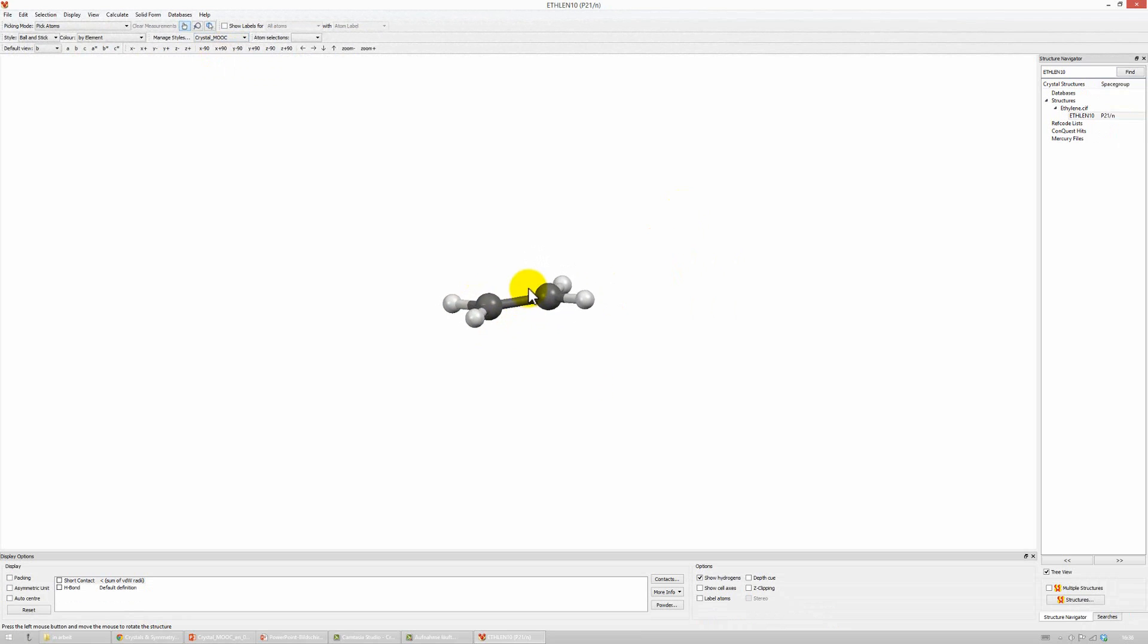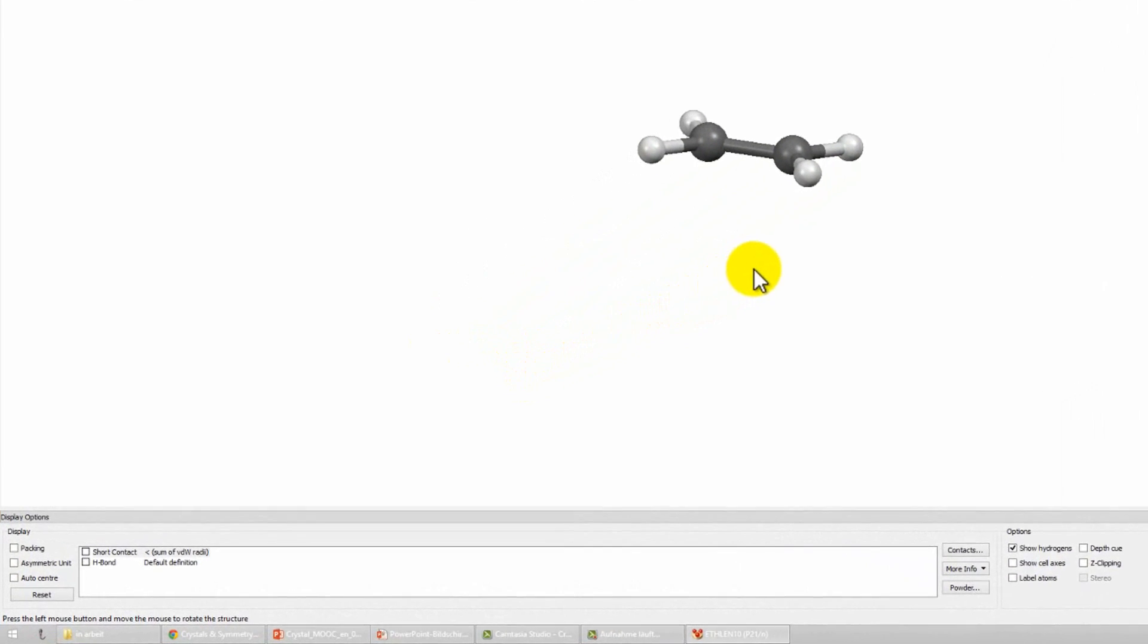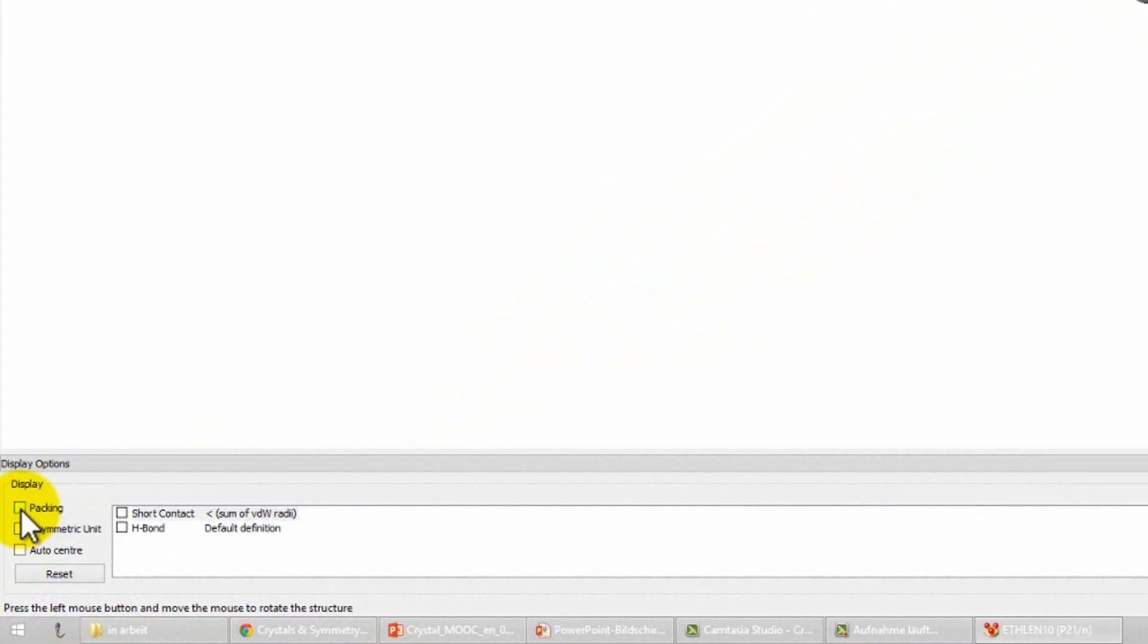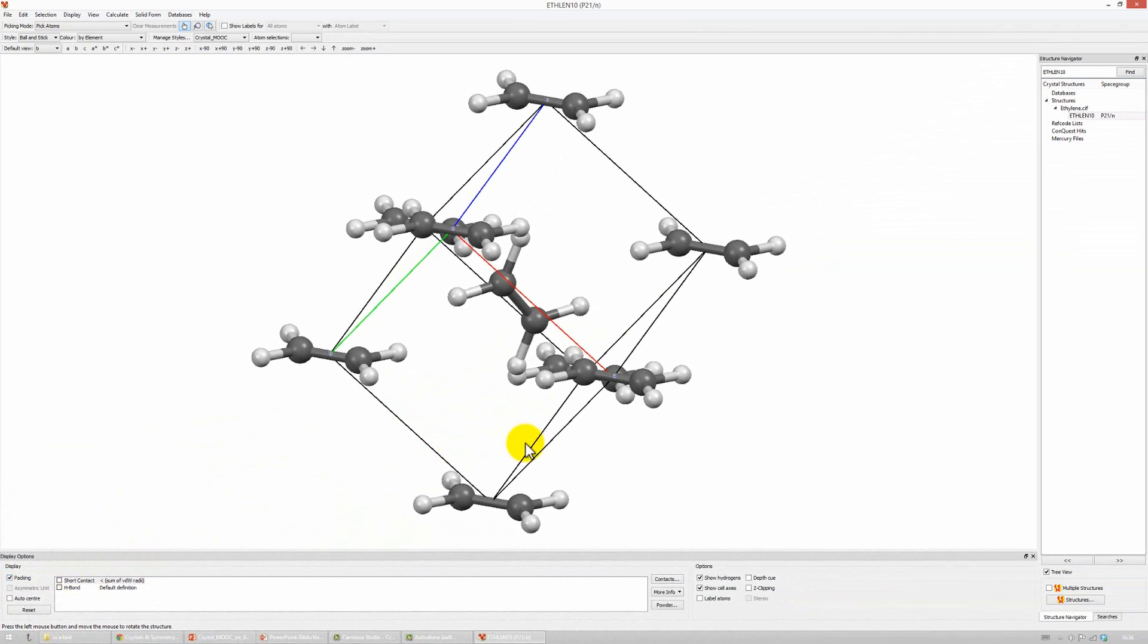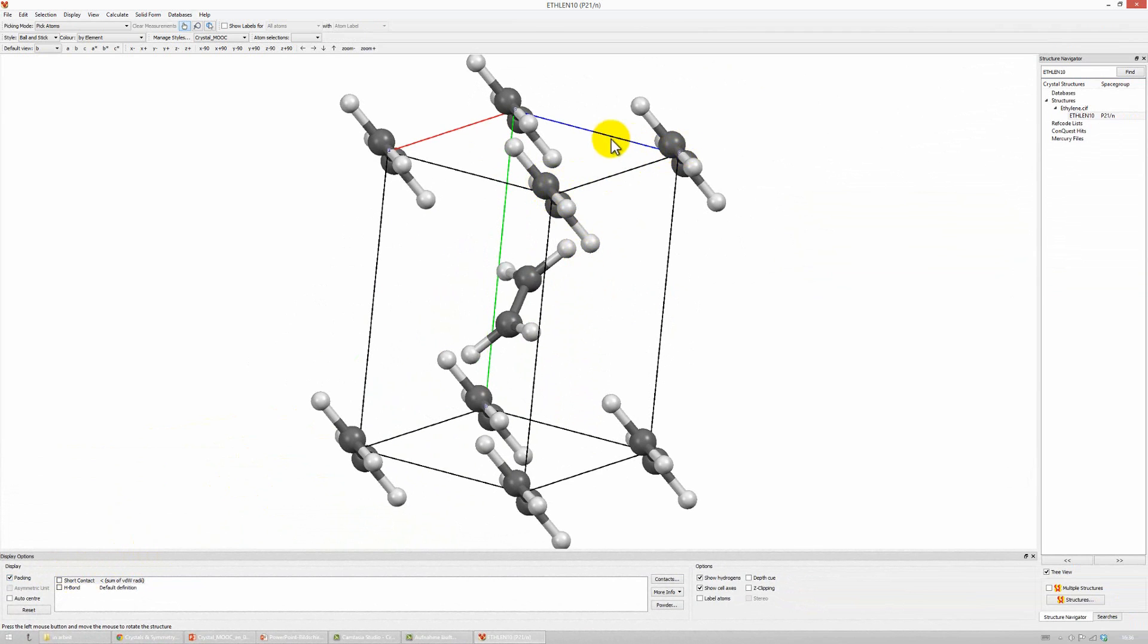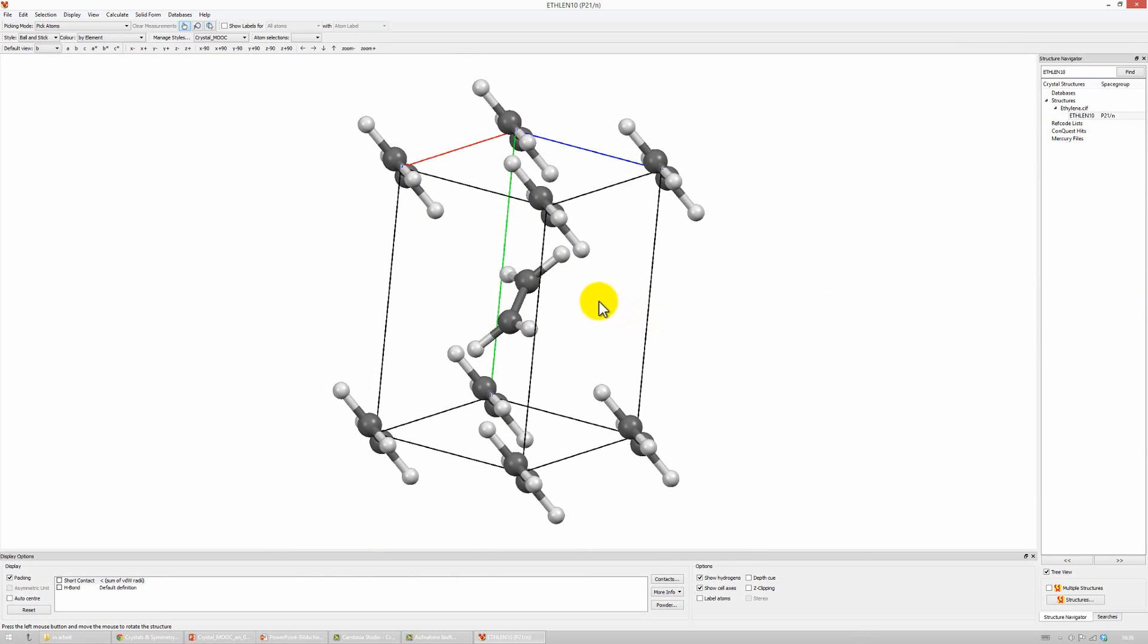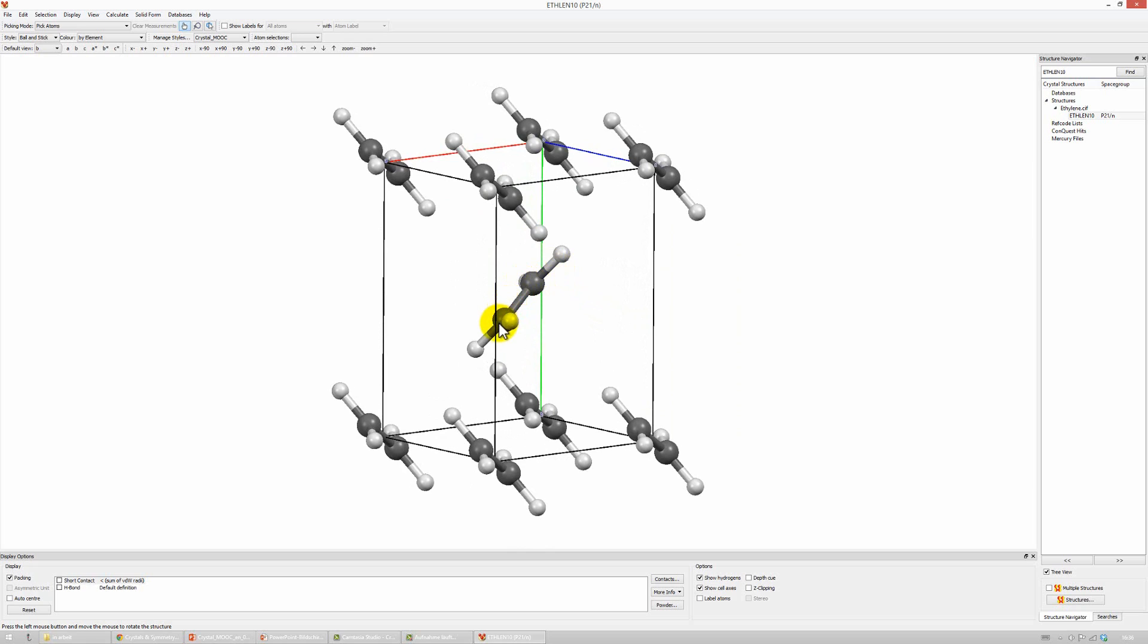While rotating the molecule, we see its flat geometry. Now let's see what the unit cell looks like. For that, you have to click here at the bottom left, Packing. Ok, there are ethylene molecules at every corner of the unit cell, and there is one additional molecule inside the cell, in the center. However, this molecule has a different orientation. Therefore, it is indeed only a primitive cell.